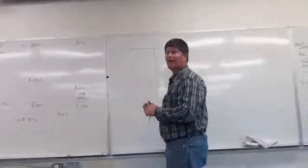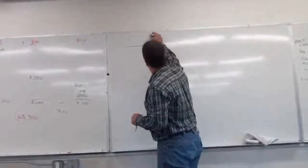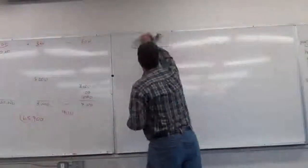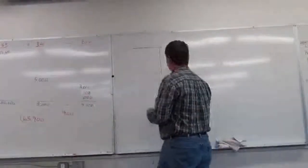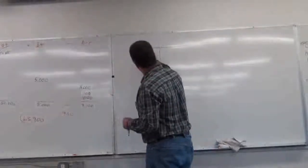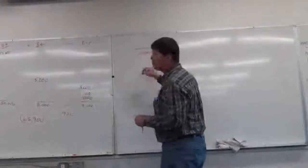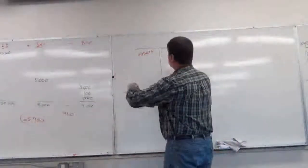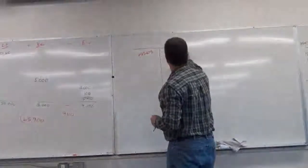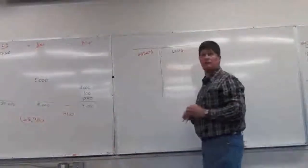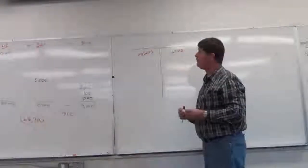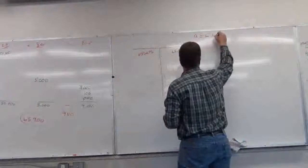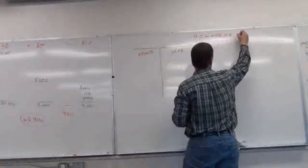If you're dealing with an asset like cash, asset accounts increase on the left side. Liability accounts increase on the right side. We're following the basic accounting equation here again: assets equals liabilities plus owner's equity plus revenue minus expenses.